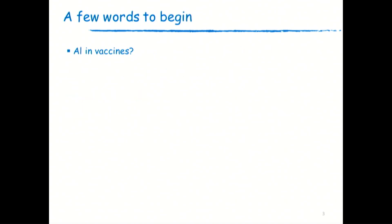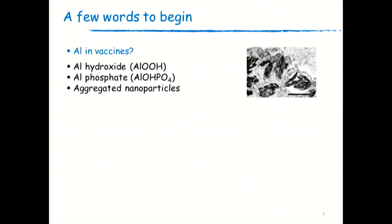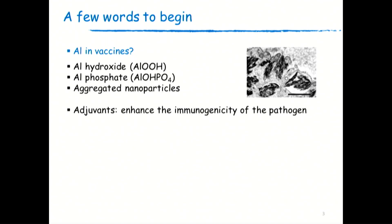You might wonder why we have aluminum in vaccines and what compounds of aluminum are in vaccines. We have mainly two aluminum salts: aluminum hydroxide and aluminum phosphate. You can see here aluminum hydroxide within immune cells in a human biopsy. The two salts are found in the form of particles — they are aggregated nanoparticles. The role of aluminum salts in vaccines is to be an adjuvant, which is added to initiate and then enhance the immunogenicity of the pathogen. This is not a contaminant — this is something that is added intentionally.